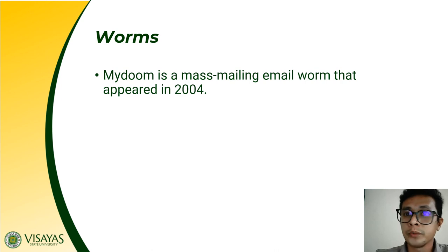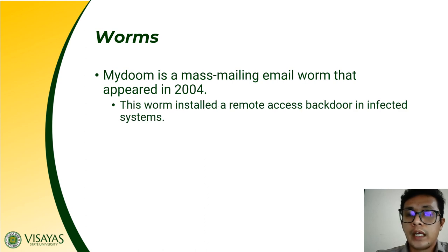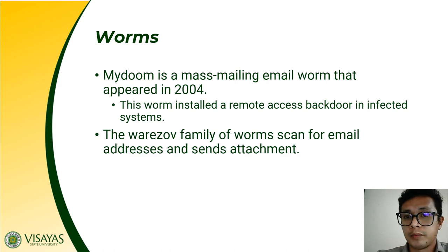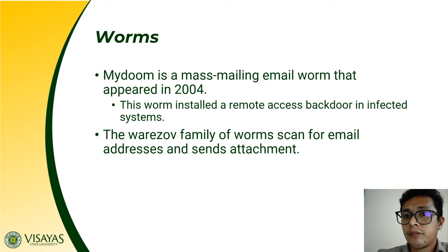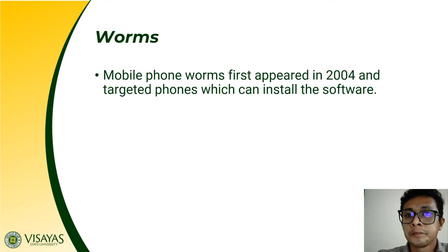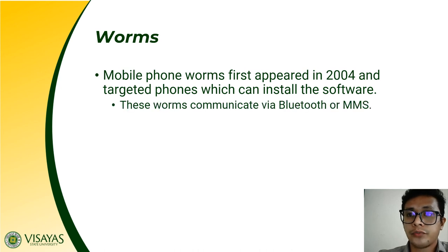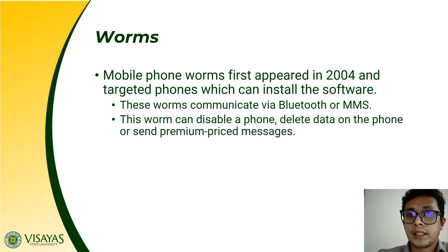We also have My Doom, which was released in the year 2004. It is a mass mailing email worm that installed a remote access backdoor in affected systems. We also have the Word Reserve family of worms that scan for email addresses and send attachments. We also have mobile phone worms, which first appeared in 2004 and targeted phones that can install software. These worms can communicate via Bluetooth or MMS, and can disable a phone, delete data on the phone, or send premium price messages.